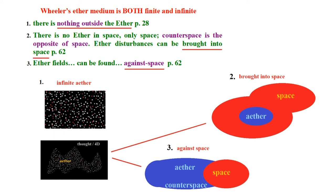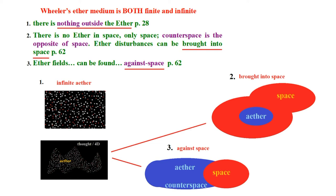Is the ether finite or infinite? Well, it's both in his theory. There is nothing outside the ether — that's on page 28. You would think if there's nothing outside the ether it would look like the first picture — the infinite ether. Otherwise something would be surrounding it, whatever dimension you want to call it. The issue is that either the ether is infinite or it's finite. Then he's got the ether being brought into space, enclosed within space, and contrasted against space — surface to surface. Again, the inconsistency: we have no idea whether the ether is finite or infinite from objectively looking at his book.